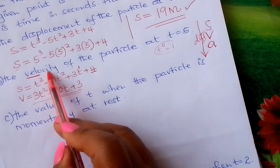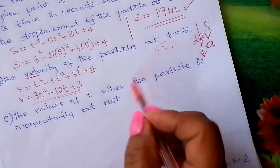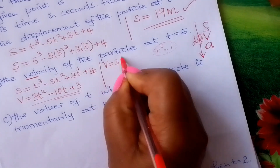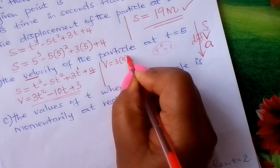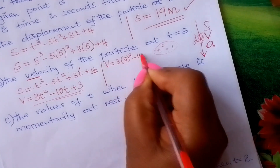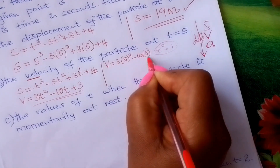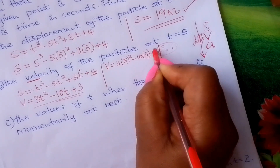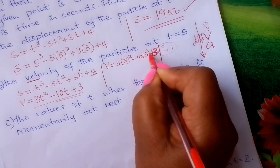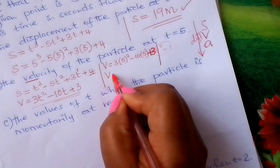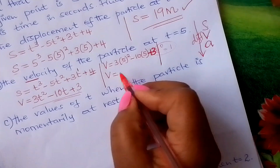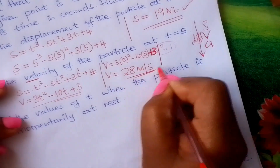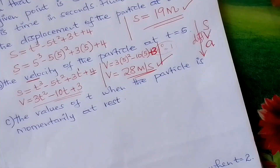The question asks for velocity at t equals 5. Substitute: v equals 3 times 5 squared minus 10 times 5 plus 3. Using a calculator correctly, you'll get 28 meters per second. That is the velocity of that particle.